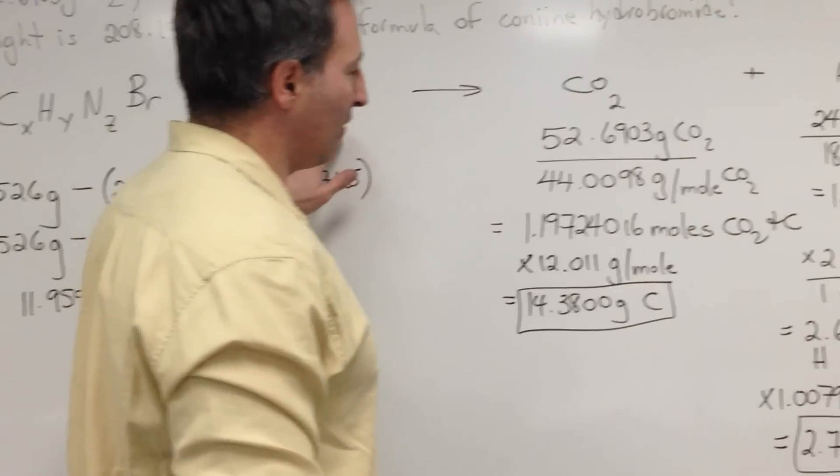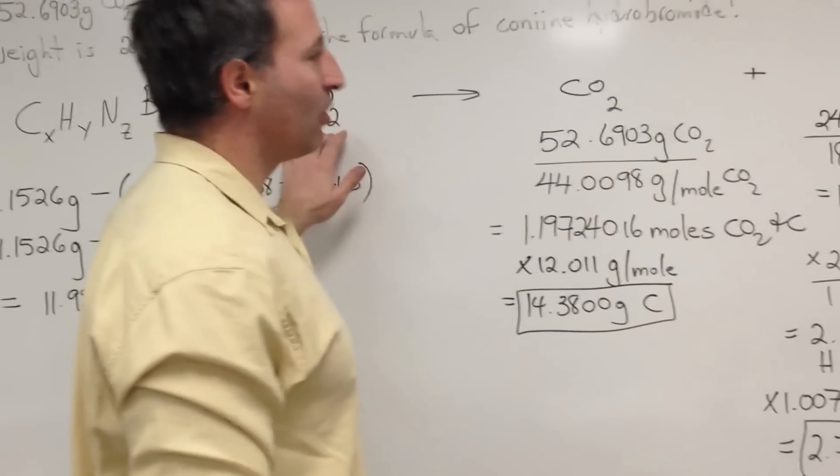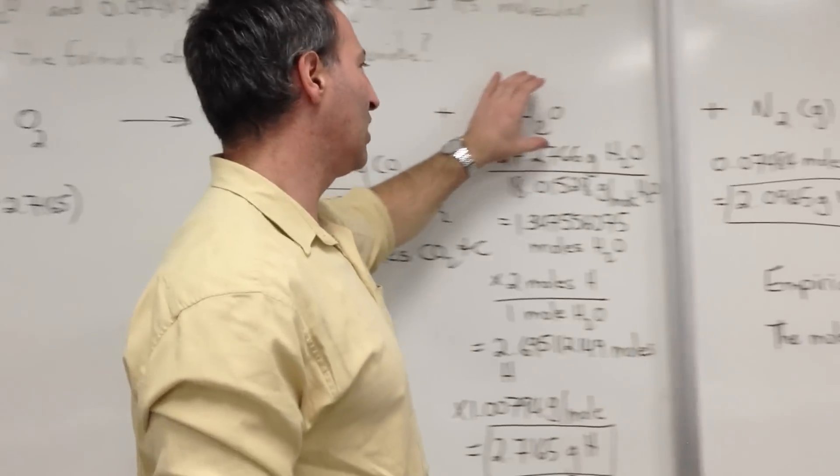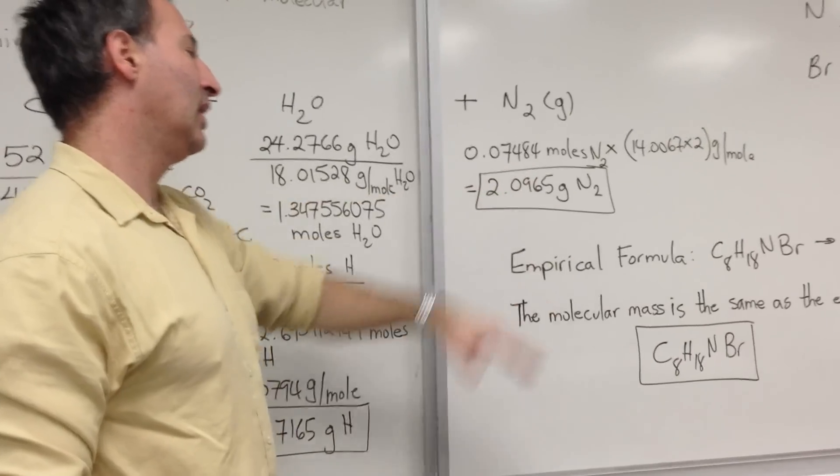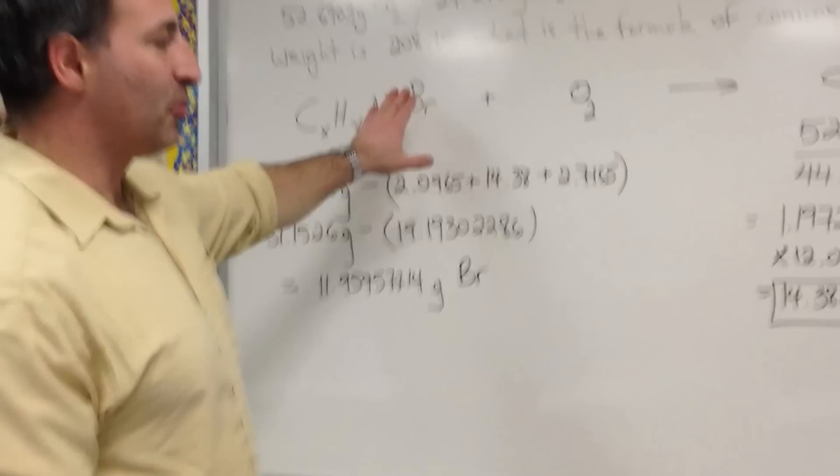Oxygen is necessary for the combustion reaction, and when you burn something, we produce carbon dioxide and water. The nitrogen gas, we've been told, is simply collected at the end, whatever is left over. We haven't said anything about bromine yet.